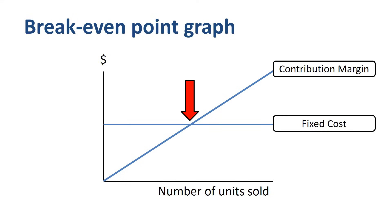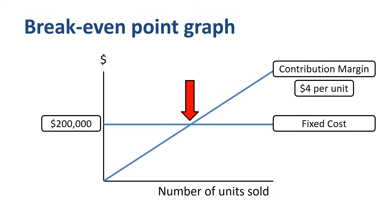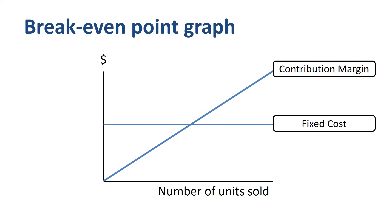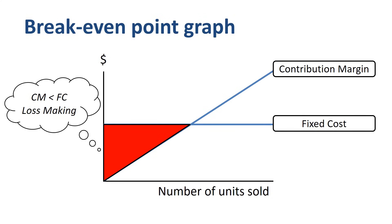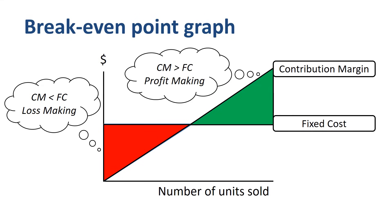Let's put some numbers to the example. If fixed costs are $200,000 and contribution margin is $4 per unit, then the business needs to sell 50,000 units to break even. If the business sells fewer than 50,000 units, then contribution margin is lower than fixed costs and the business is loss-making. If the business sells more than 50,000 units, then contribution margin is higher than fixed costs and the business makes a profit.